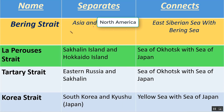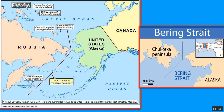The first strait is the Bering Strait. The Bering Strait separates Asia from North America — specifically Russia from Alaska of the United States of America — and connects the East Siberian Sea with the Bering Sea.